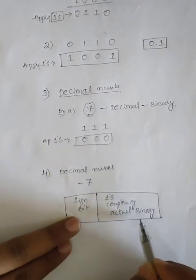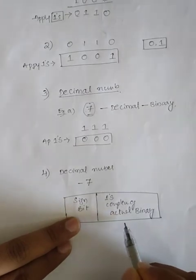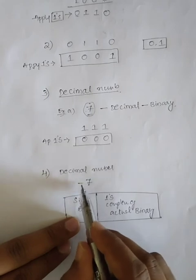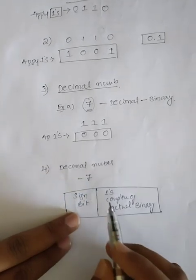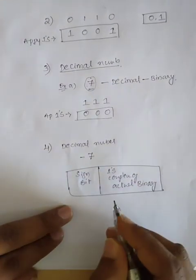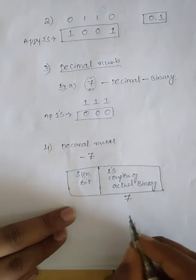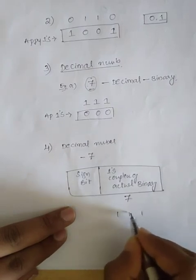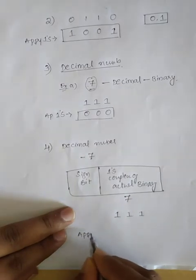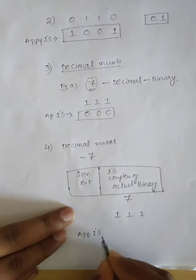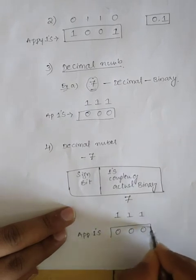The sign bit represents the negative sign. First convert seven to its binary equivalent, which is 1 1 1. Then apply ones complement of that binary number: the complement is 0 0 0. We place the sign bit in front. So we are building the ones complement representation of minus seven.